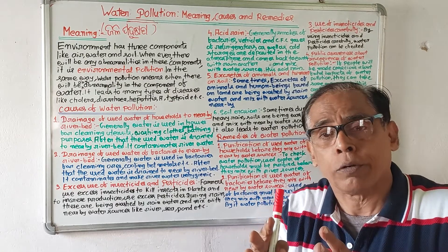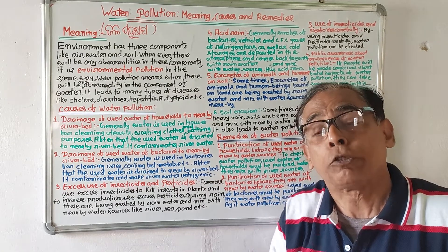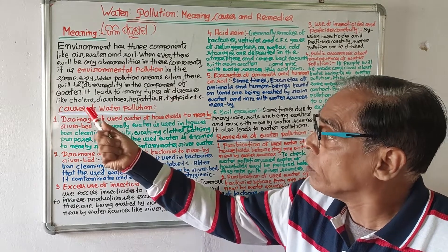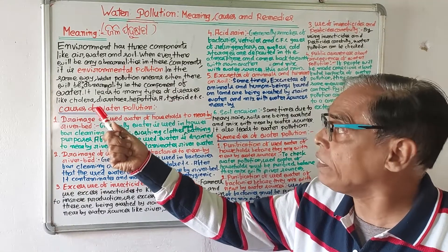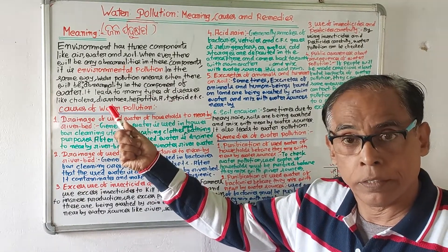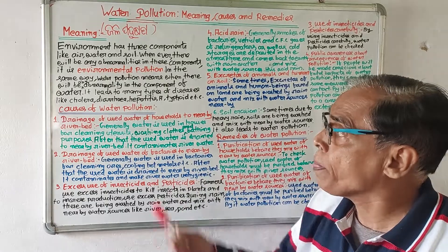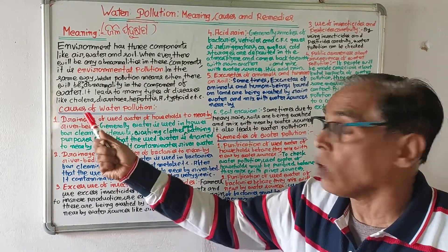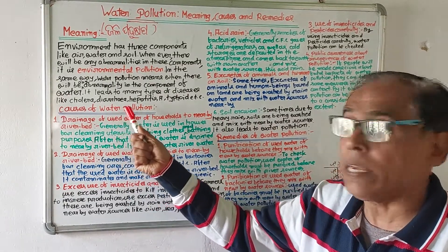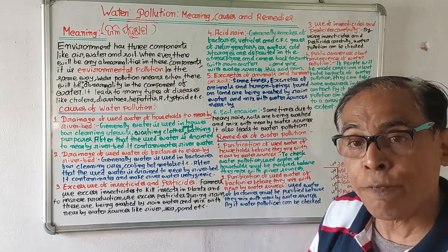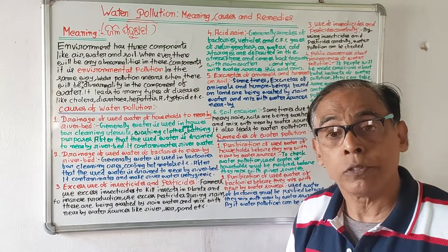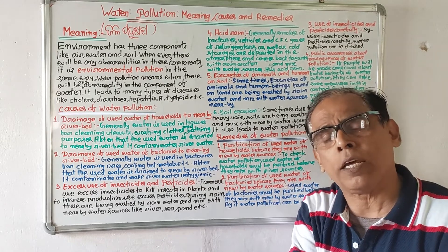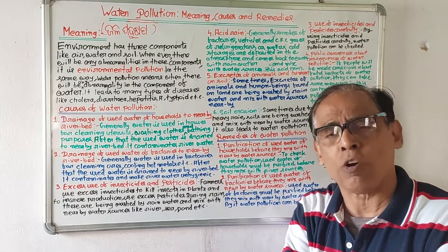Water pollution can cause diseases such as diarrhea, hepatitis, typhoid, cholera, and diaphragma. These diseases particularly affect children and are serious public health concerns.